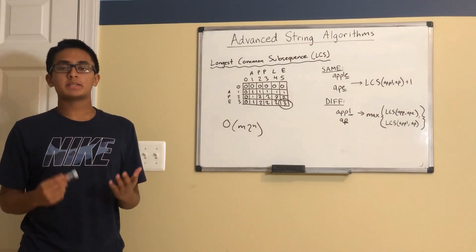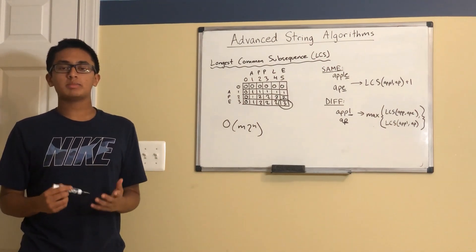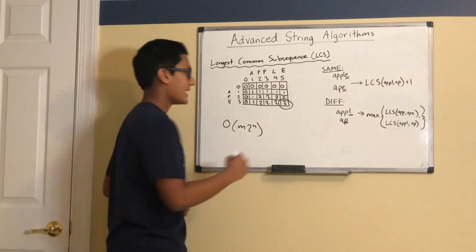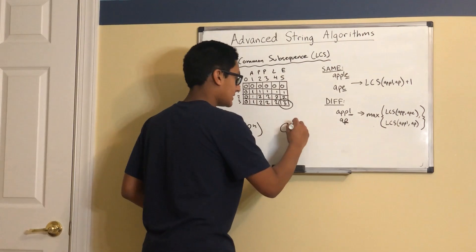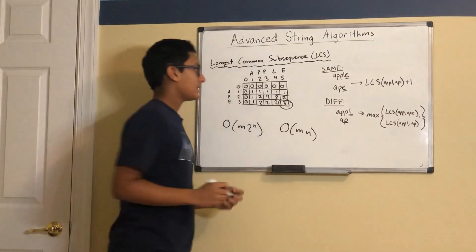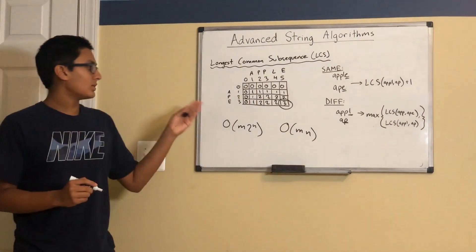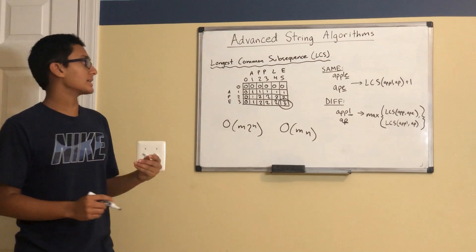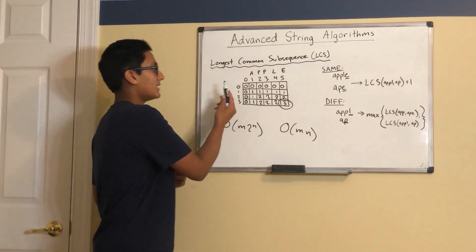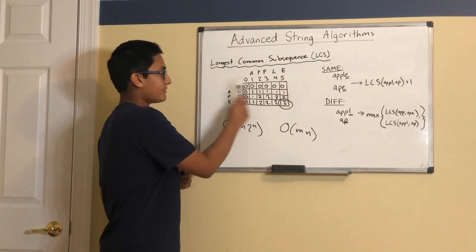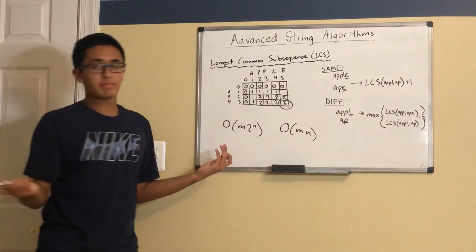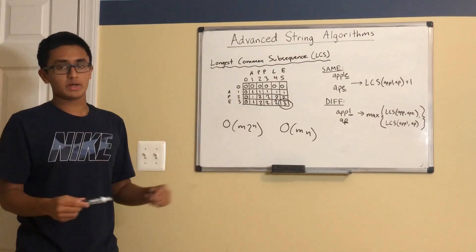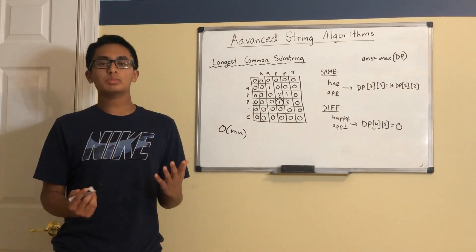The time complexity of this problem is O(m × n) using dynamic programming, where m and n are the lengths of the two strings, since we have to fill in an m by n matrix and we only visit each cell once.